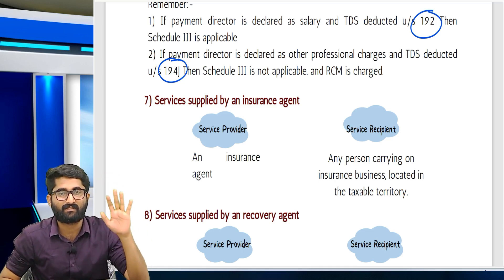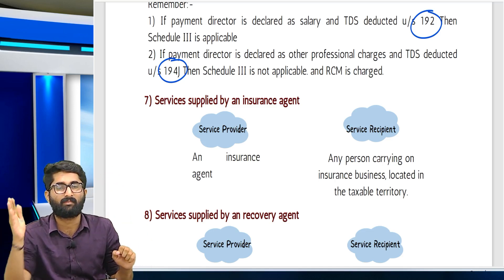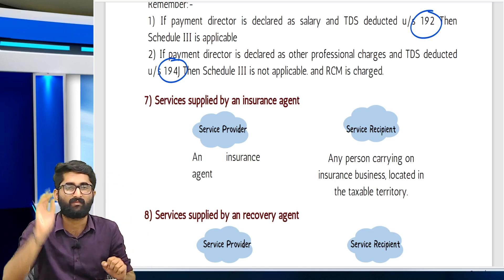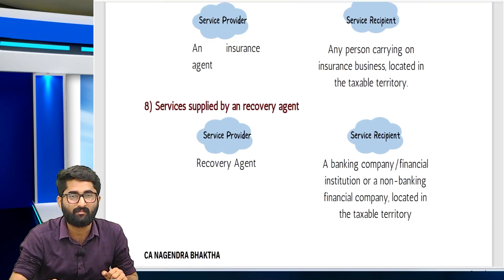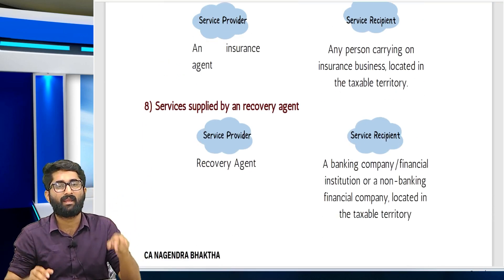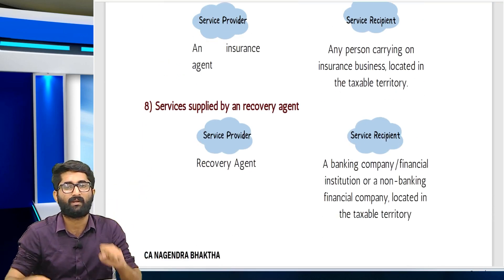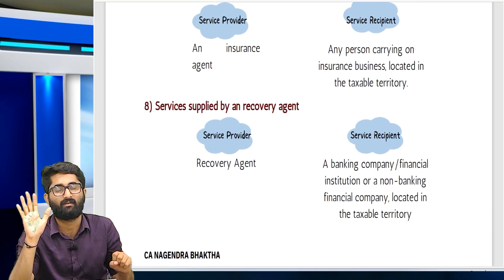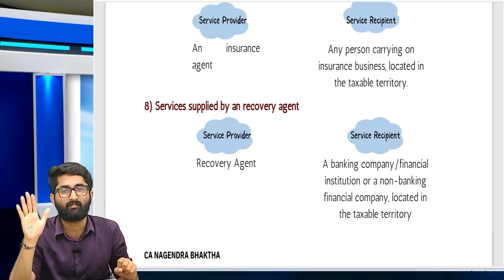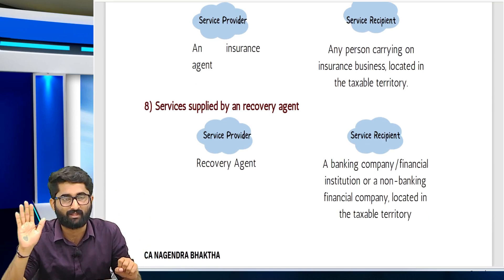Entry 7: Services supplied by an insurance agent — insurance agent is the service provider, insurance company is the recipient, and the insurance company will pay under RCM. Entry 8: Recovery agent — recovery agent is the provider, and banking company, NBFC or financial institution is the service recipient; they will pay under RCM.